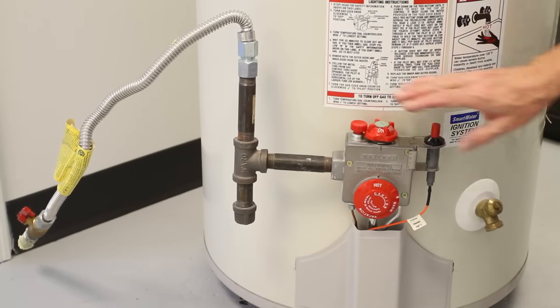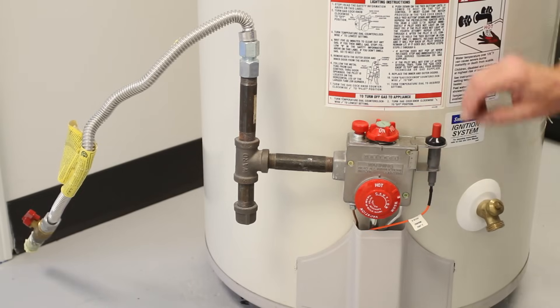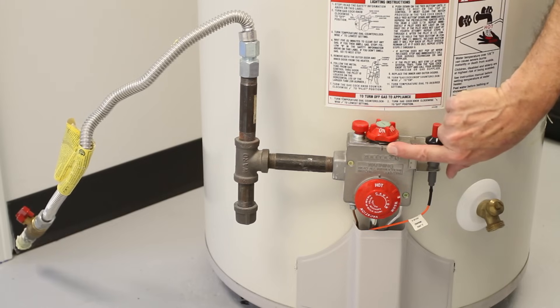If you have a hot water heater that is fueled by gas, we need to explain how this mechanism works. Here at the top is a knob that has three settings that align with the little tab right there.